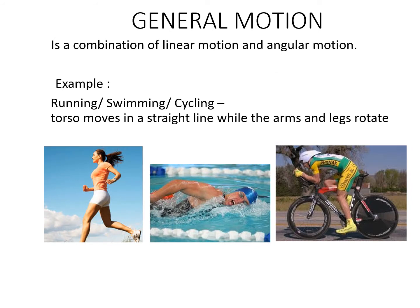Having unpacked linear and angular, general motion is simply a combination of the two. Pretty much any locomotive fundamental movement skill includes a relatively straight torso but with angular motion around the shoulder, hip, elbow and knee joints. Running, swimming and cycling are all general motion.